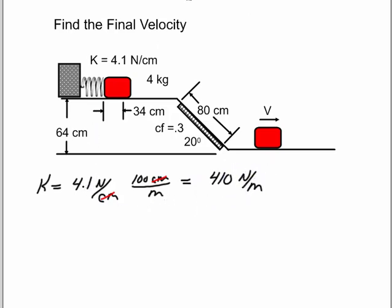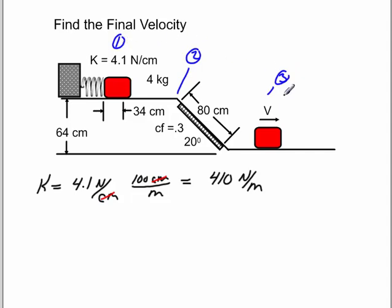I'm going to set this problem up in this fashion. There's more than one way to do it. I'm going to go from 1 to 2, and then from 2 to 3. You could go directly from 1 to 3 if you want — I just think it's easier to go from 1 to 2, and then work my way down from 2 to 3.